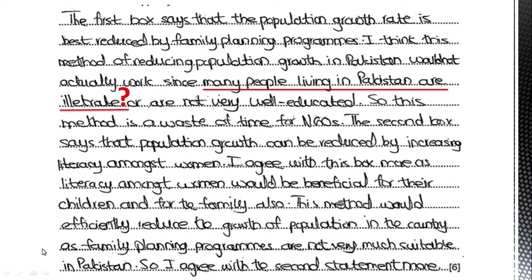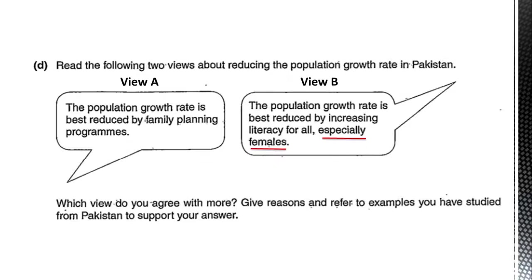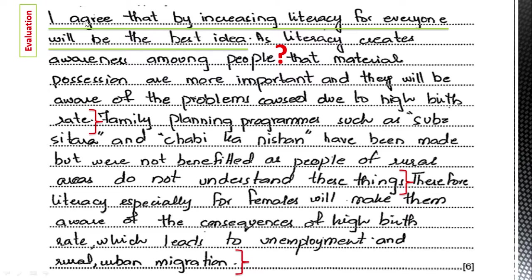Therefore this candidate could only reach Level 1, so only one mark is credited. Now this is the same question — let us see another script. The second student writes: 'I agree that increasing literacy for everyone will be the best idea.' This is the evaluated statement and judgment they have given. They then explain that literacy creates awareness among people — for example, awareness that material possessions are more important, and second, they will be aware of the problems caused due to higher birth rates.